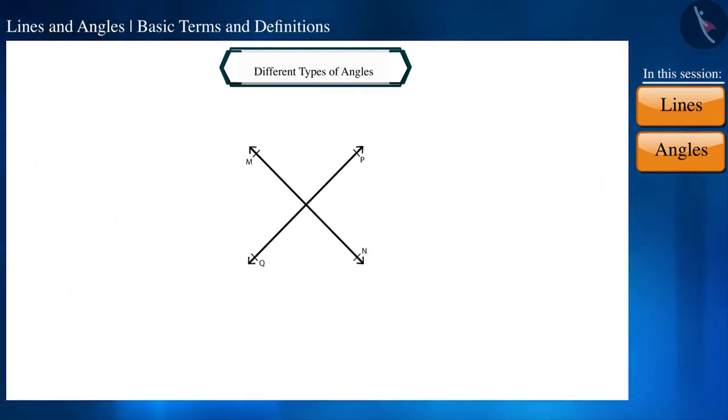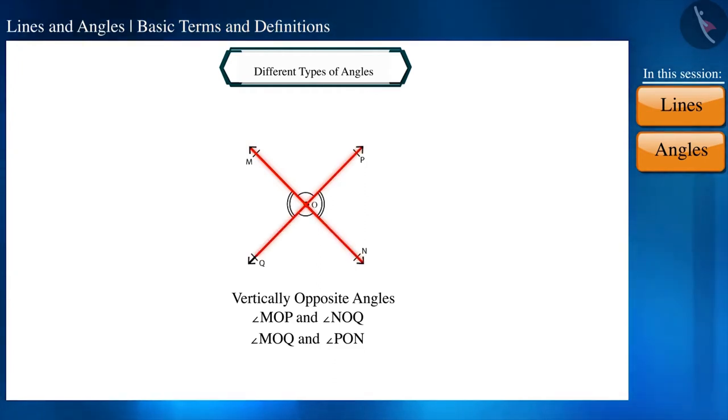If two lines intersect each other, then vertically opposite angles are formed. Like here, the line MN is intersecting line PQ at point O. Here we get two pairs of vertically opposite angles. The first pair is angle MOP and angle NOQ.